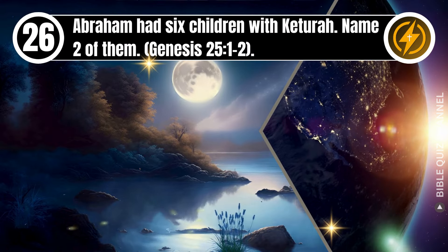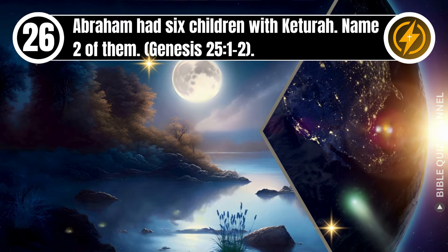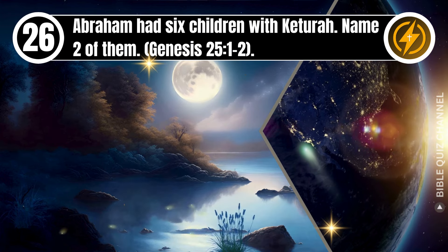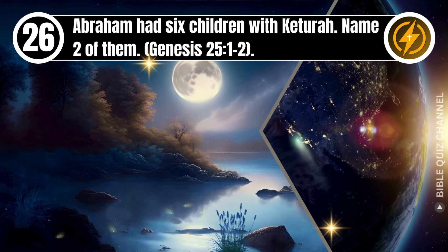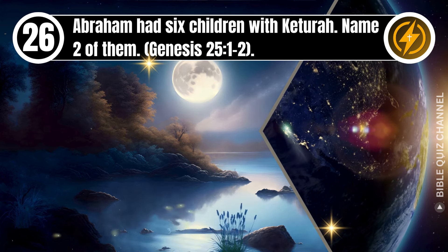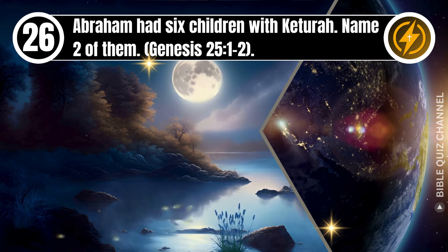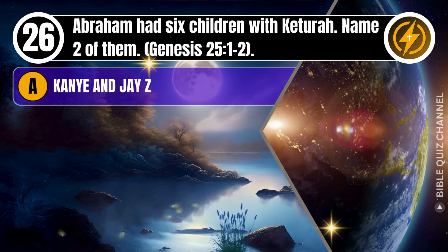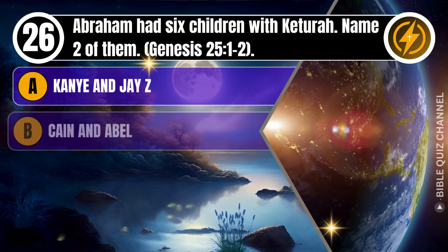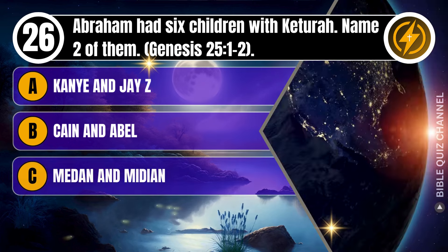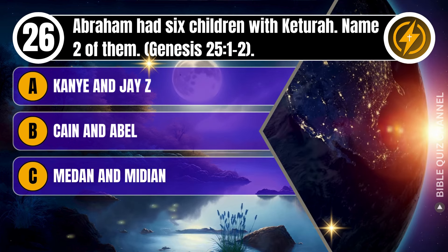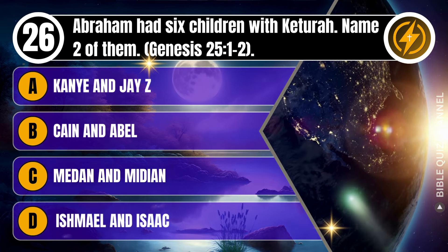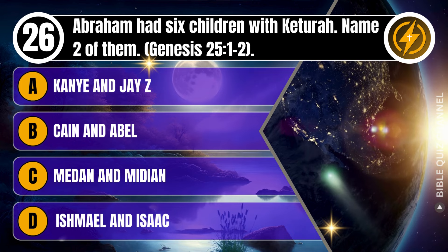Question 26. Abraham had six children with Keturah. Name two of them. Genesis, chapter 25, verse 1 to 2. A. Kanye and Jay-Z. B. Cain and Abel. C. Medan and Midian. D. Ishmael and Isaac. You get 10 seconds.